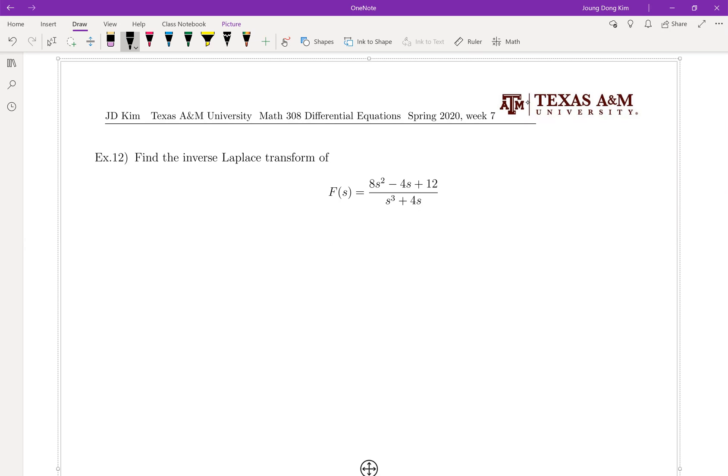The denominator is really important to find the correct inverse Laplace transform. Your denominator can be factored by s times (s² + 4), which is s times (s² + 2²), because on your table we have those forms. The numerator we cannot do anything for this for now. But what we're going to do is partial fraction.